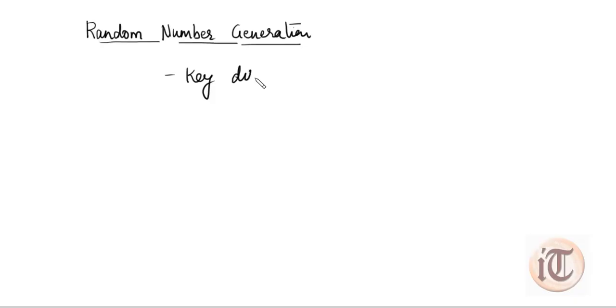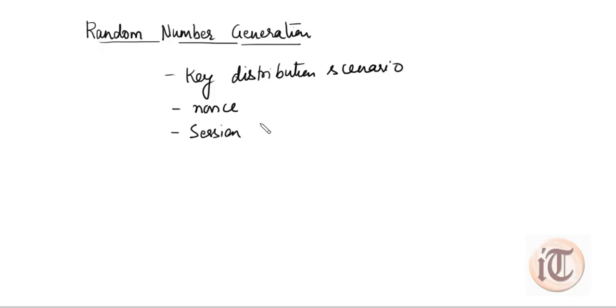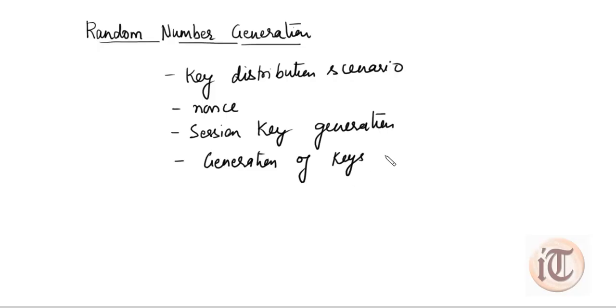Hello friends, today we are going to discuss random number generation. Random numbers play a very important role in encryption for various network security applications like key distribution scenarios, generating nonces which are used for handshaking to prevent replay attacks, session key generation, and generation of keys for the RSA public key encryption algorithm. These are some areas where we use random numbers, and today we are going to discuss some algorithms used to generate them.